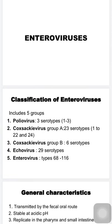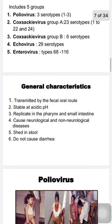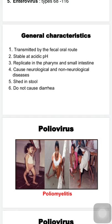Now let us look at the classification of enteroviruses. It includes five groups: poliovirus, coxsackievirus group A, coxsackievirus group B, echovirus, and enteroviruses types 68 to 116 or more. Poliovirus includes three serotypes (1 to 3). Coxsackievirus group A includes 23 serotypes (1 to 22 and 24, skipping 23). Coxsackievirus group B includes six serotypes (1 to 6). Echovirus includes about 29 serotypes.